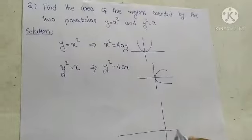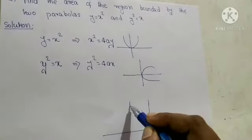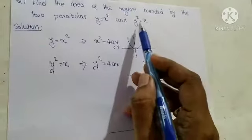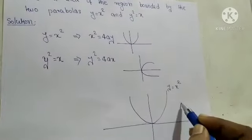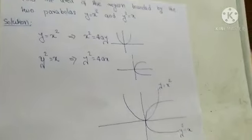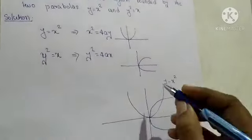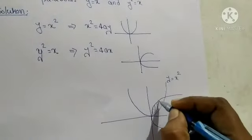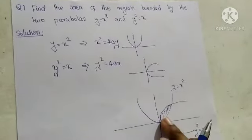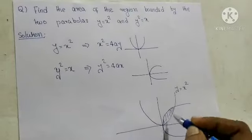I am going to draw the parabola y equal to x square, and also y square equal to x. This is our second parabola. We need to draw the area of the region bounded by the two parabolas. This is the region of area that we have to find out. This shaded region's area we need to find out.